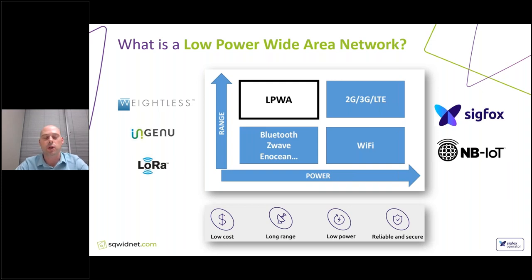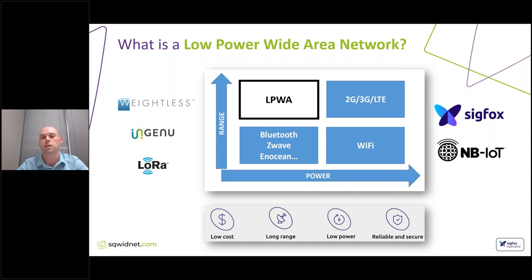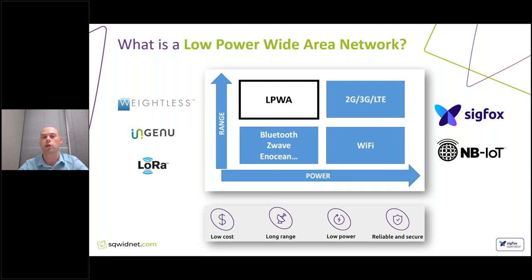In the words of Andrew S. Tanenbaum, 'the great thing about standards is that there are so many to choose from.' There's no difference in the space of low power wide area networks, which is a good thing showing this quadrant is here to stay. I will focus on two technologies: NB-IoT, the offering from the traditional cellular world through the 3GPP, and Sigfox, the proprietary technology that SquidNet operates. All of these low power wide area offerings pivot around the same core features: low cost connectivity, long range communication, long battery lives, and reliability and security, which are core given the millions of IoT network devices deployed in utilities, security, and other sectors.